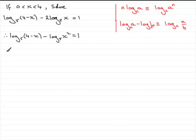Okay, so we move on then, and we now have the log in base 5, and we can divide these, so we have 4 minus x all over x squared, and that equals 1.